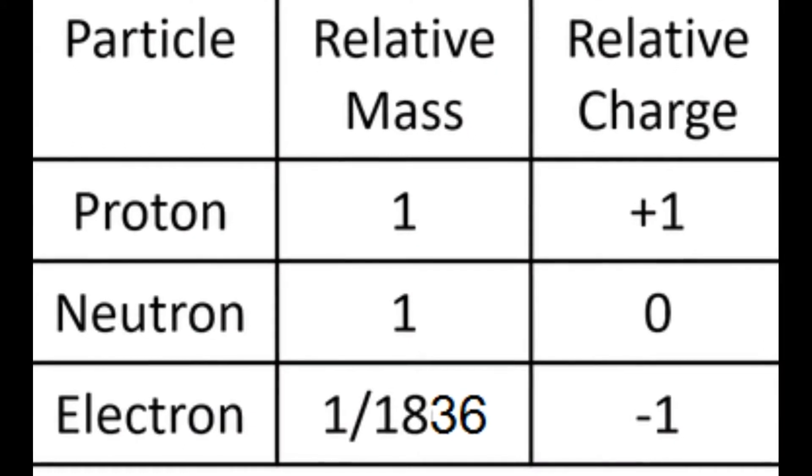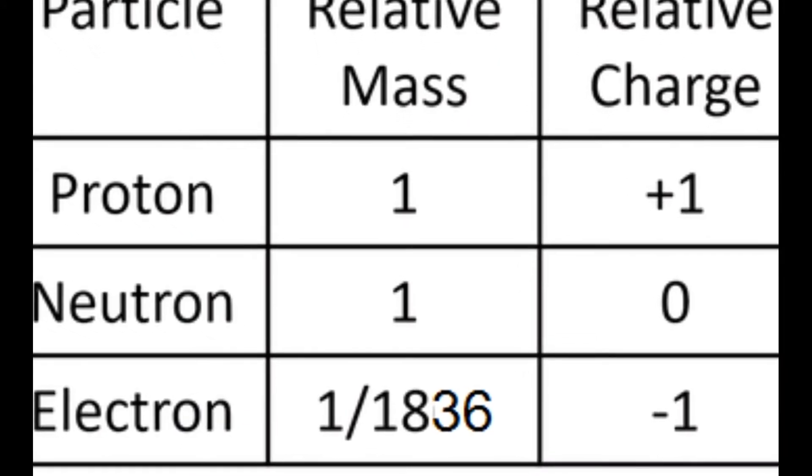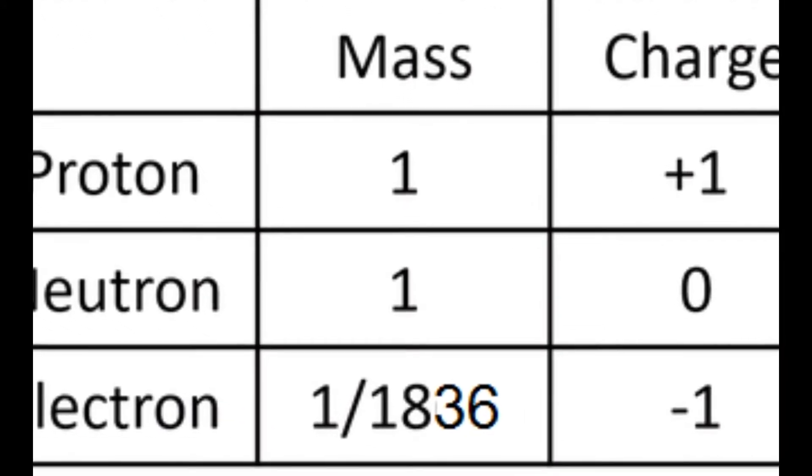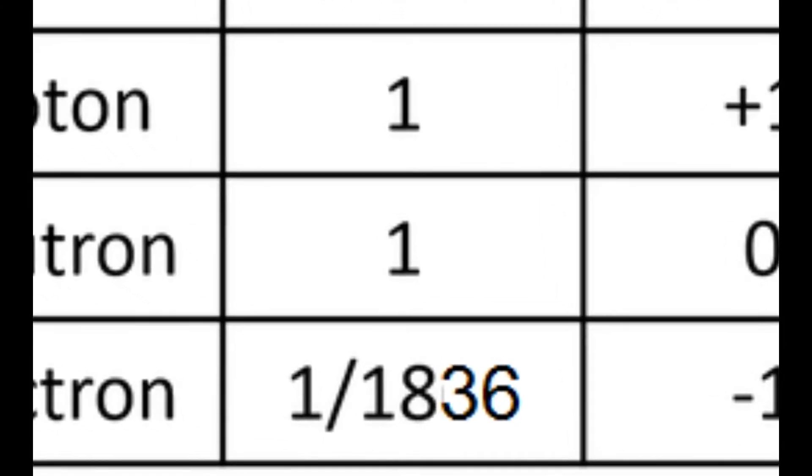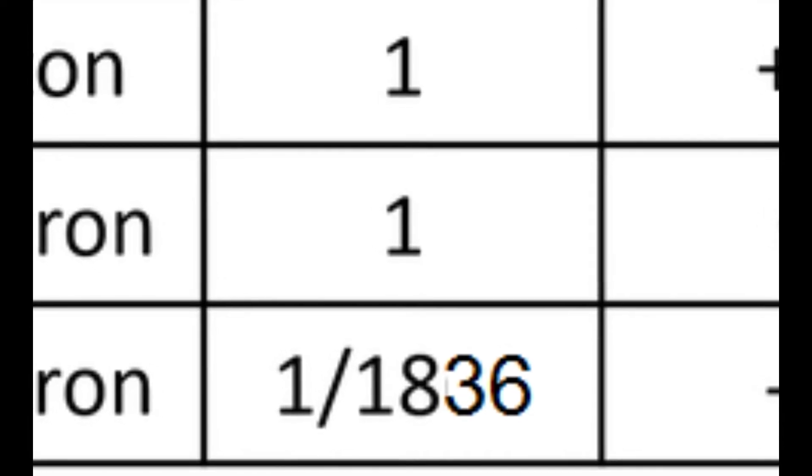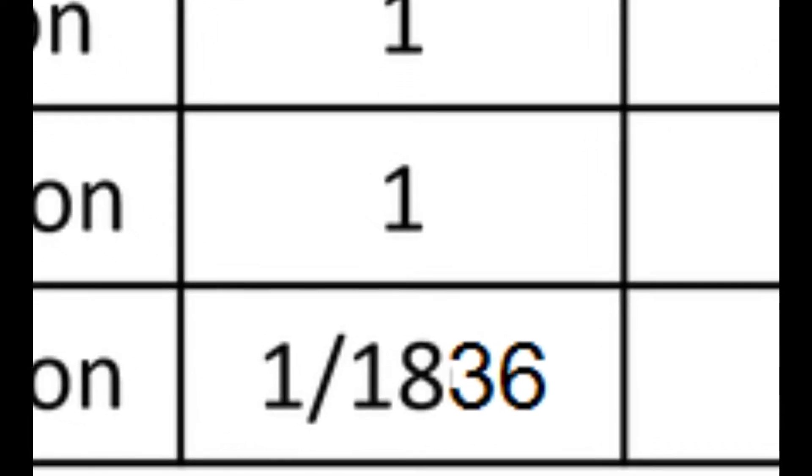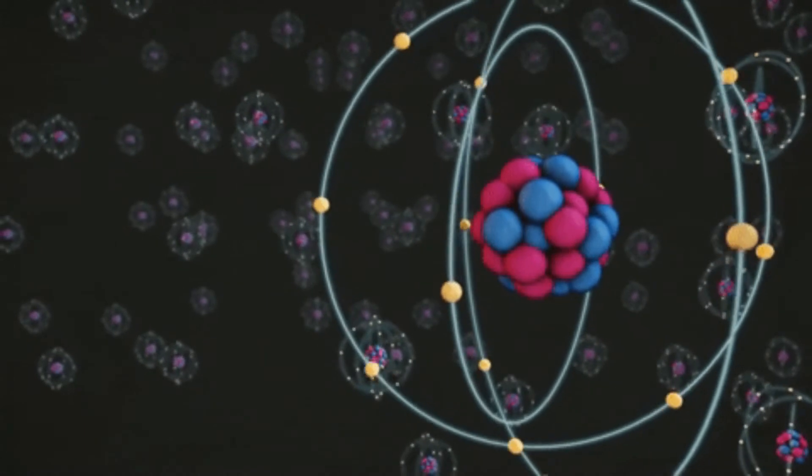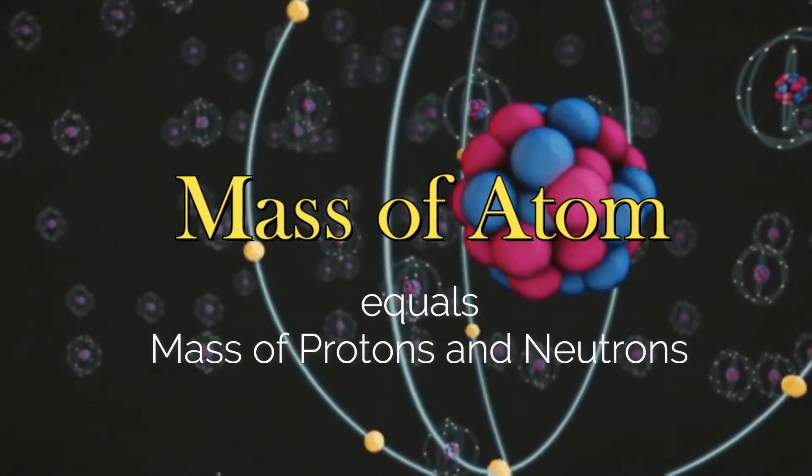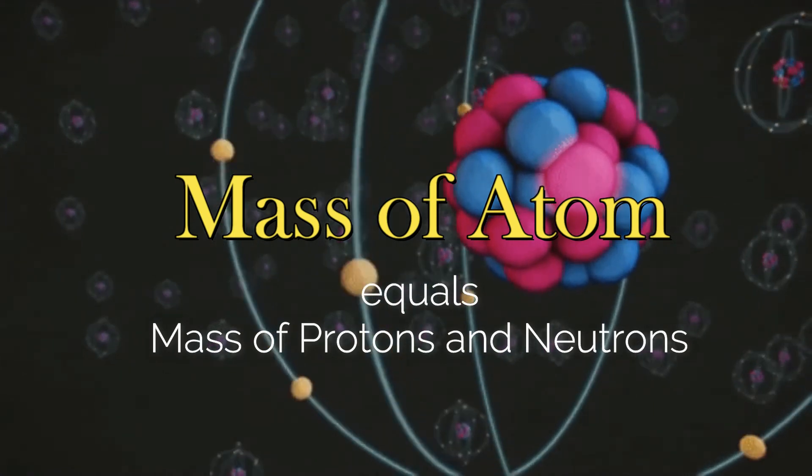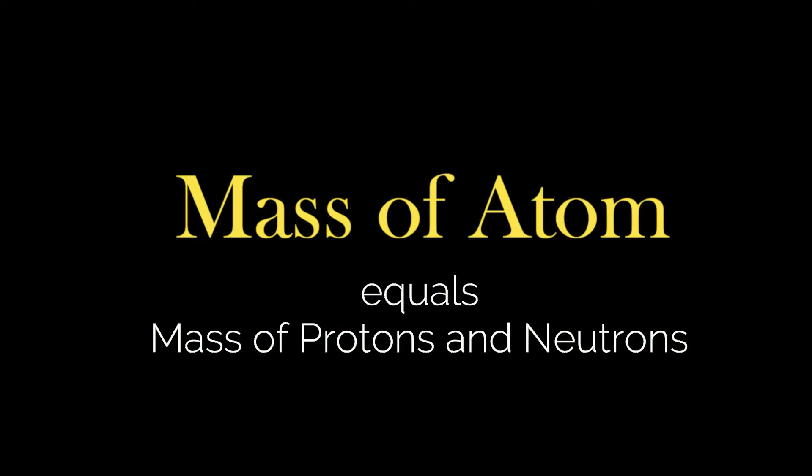The mass or weight of the electron is very insignificant to the overall mass of the atom. The electron has a mass of 1 over 1836 amu. That is a very small number. So, it is understandable why the mass of the atom is solely based on the mass of the protons and the mass of the neutrons.